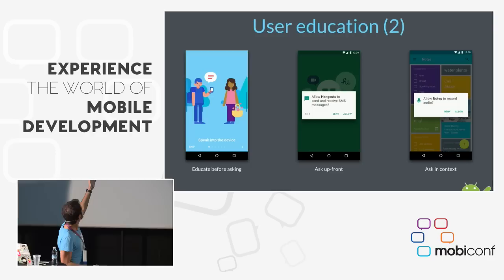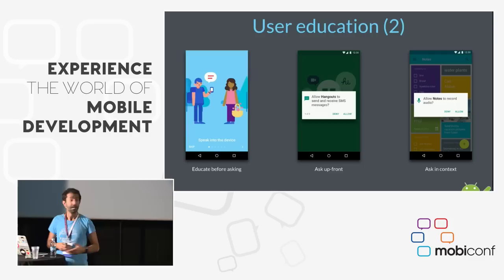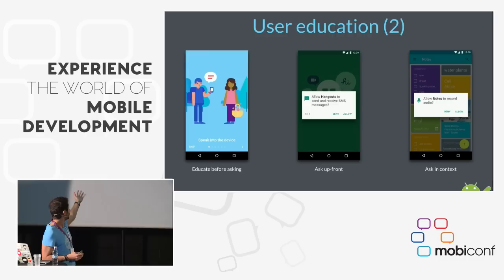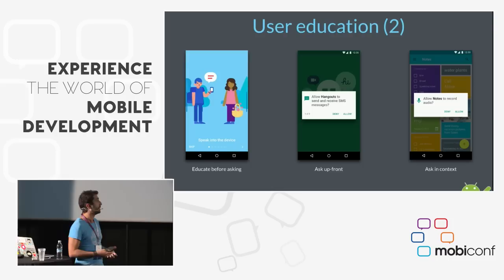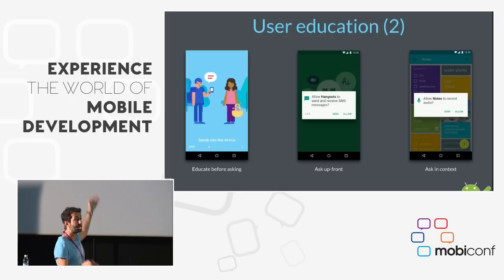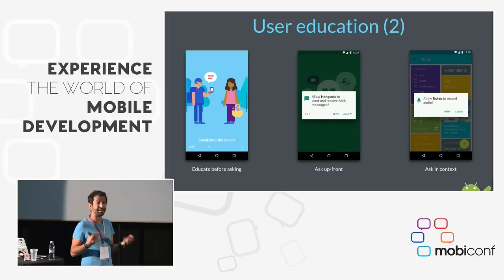The first is 'educate before asking.' Imagine the user is going to speak to the device, so we need to ask for the microphone permission. We should educate the user before asking — a nice way is with a tour. We're not explicitly saying we'll ask for the permission, because the user isn't technical and just wants to use the app. We tell the user that with this app you can speak to the device.